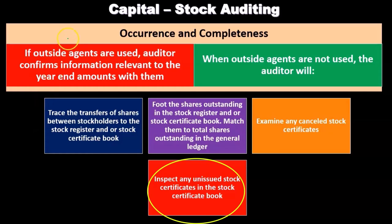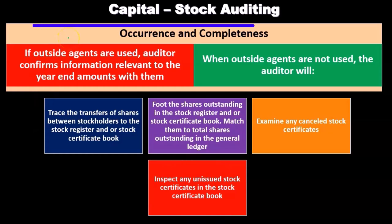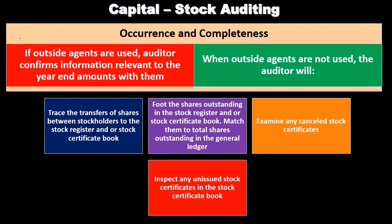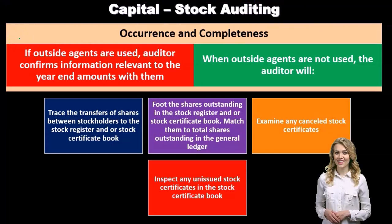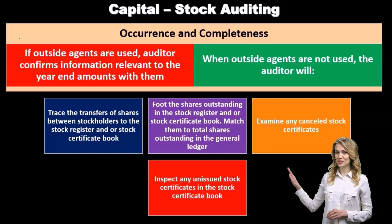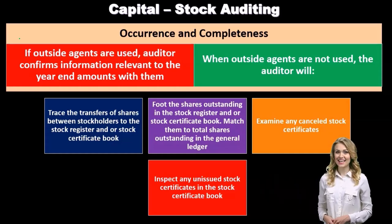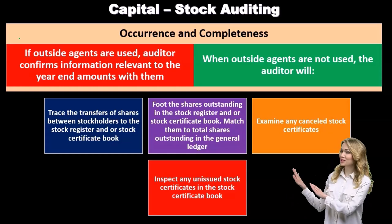So once again, we have the capital stock auditing for occurrence. If outside agents are used, the auditor can confirm the information relevant to the year with them. When outside agents are not used, the auditor will have to go through some more procedural steps.